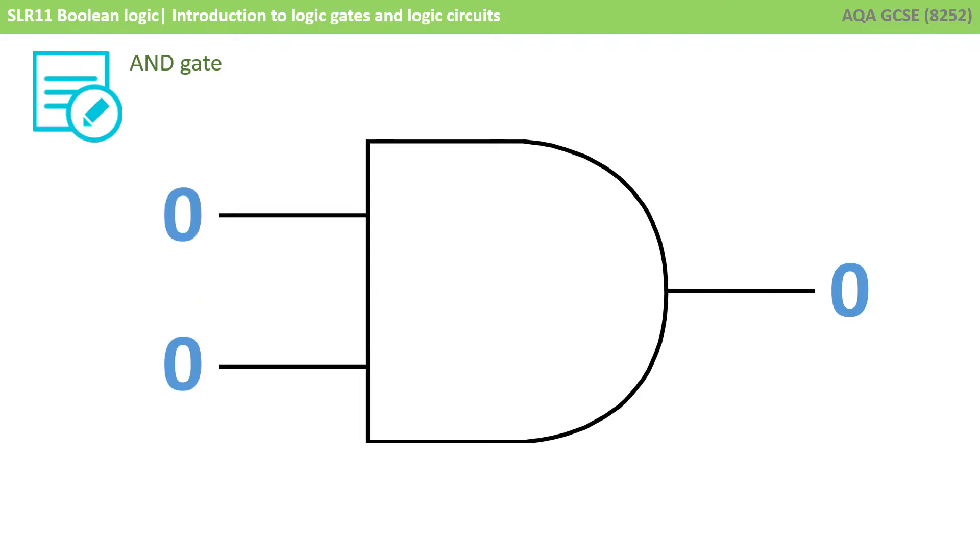The second gate is an AND gate. Now this gate takes two inputs. Like the name of the gate suggests, both of these inputs need to be ON, they need to have an electrical current, they need to have their inputs at 1, for the output to be 1.